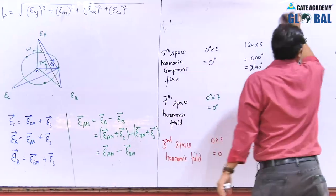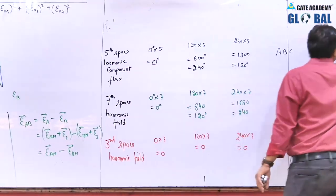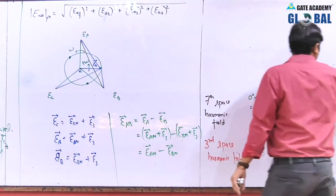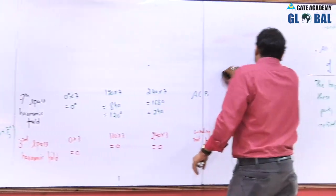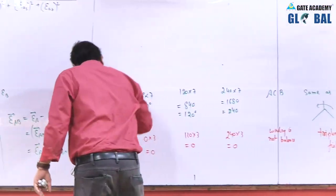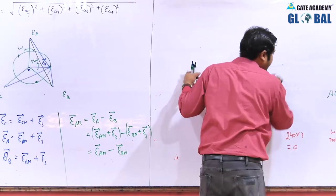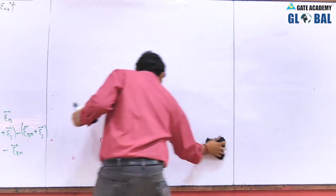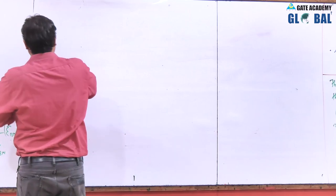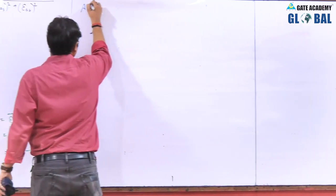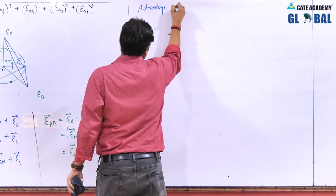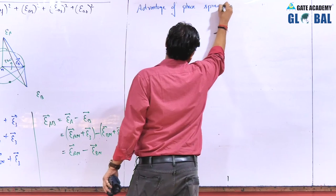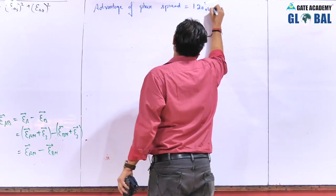The triplen harmonics are dangerous because with them mixed loading is not going to be possible. However, if we design the phase spread to be 120 degrees electrical — which is only possible in the case of double layer winding — then all triplen harmonics can be avoided. The advantage of phase spread equals 120 degrees electrical is now discussed.